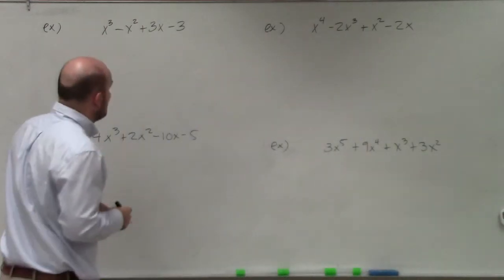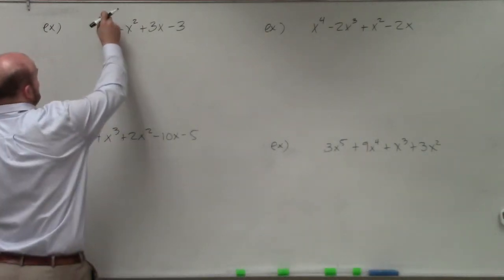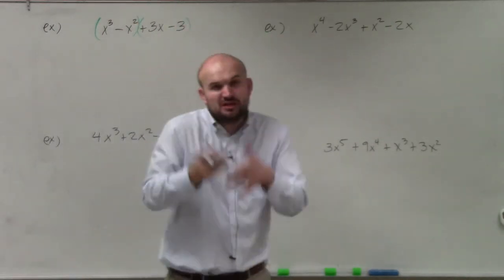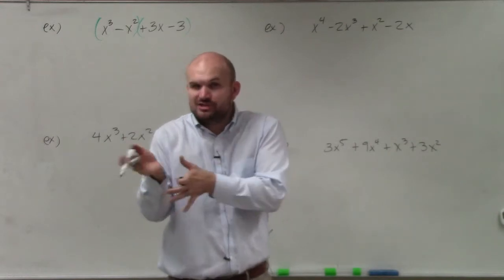So basically by grouping what it's telling us is we're going to group the first two terms and then group the last two terms. And then basically what we're going to do is we're going to look at those two terms and try to factor out the GCF.